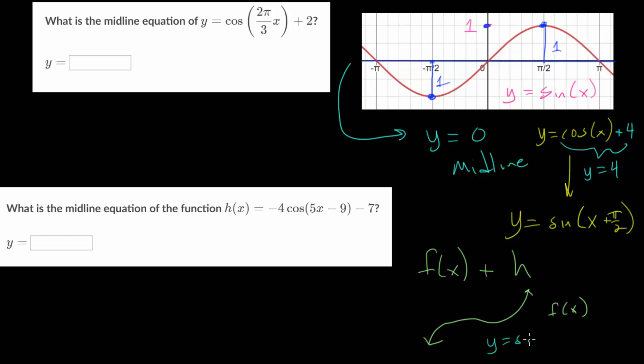this will just give us a midline at negative 2. It shifts the midline of the sine function down 2 units.